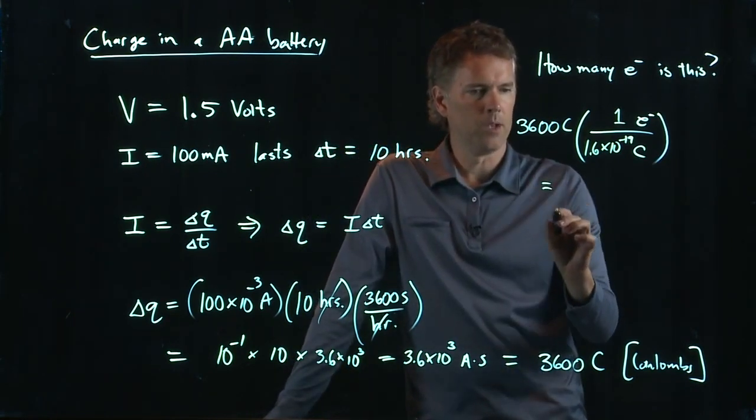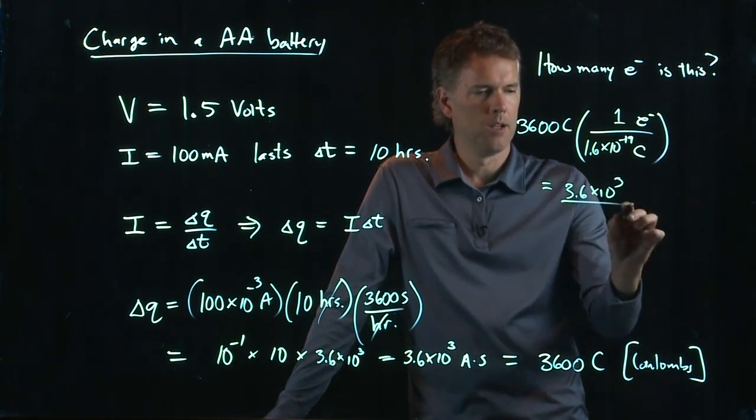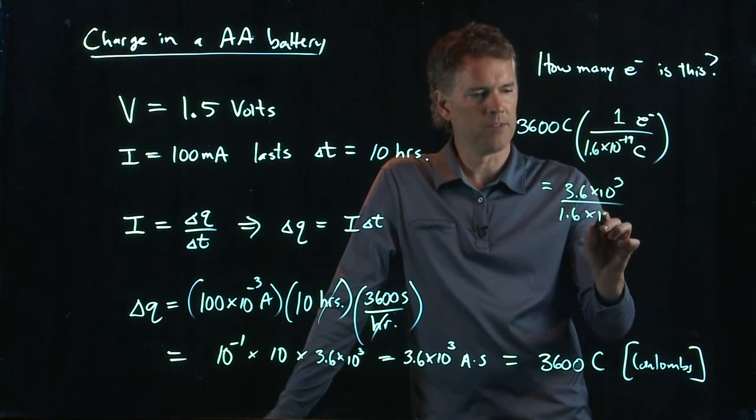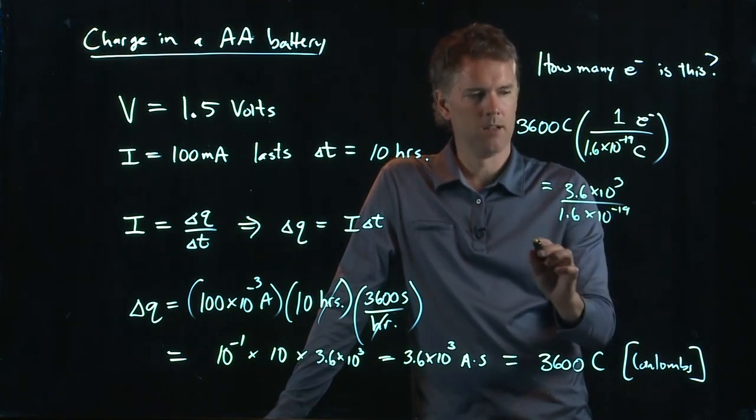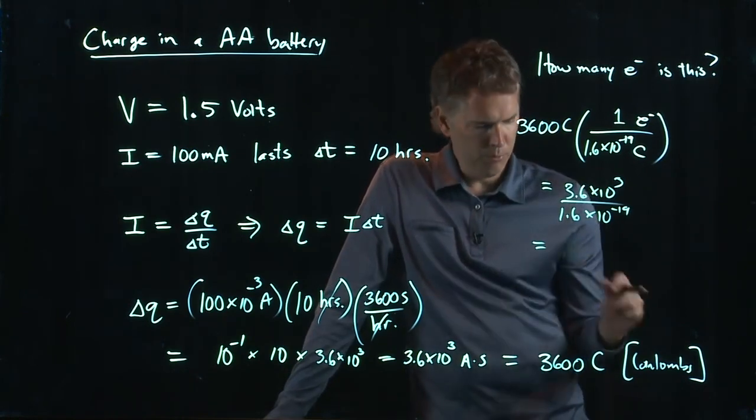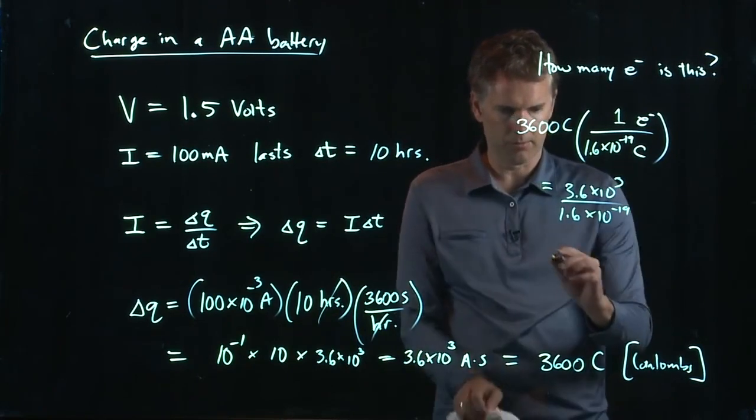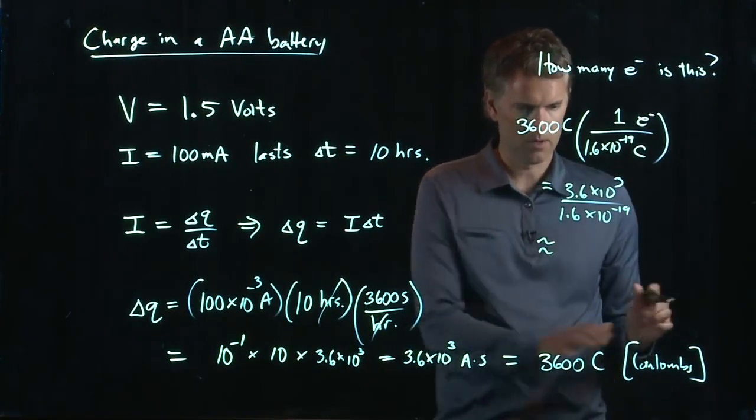And so we get 3.6 times 10 to the 3 divided by 1.6 times 10 to the minus 19. 3.6 over 1.6 is pretty close to 2. It's a little bit more than 2, but that's approximately 2, right?